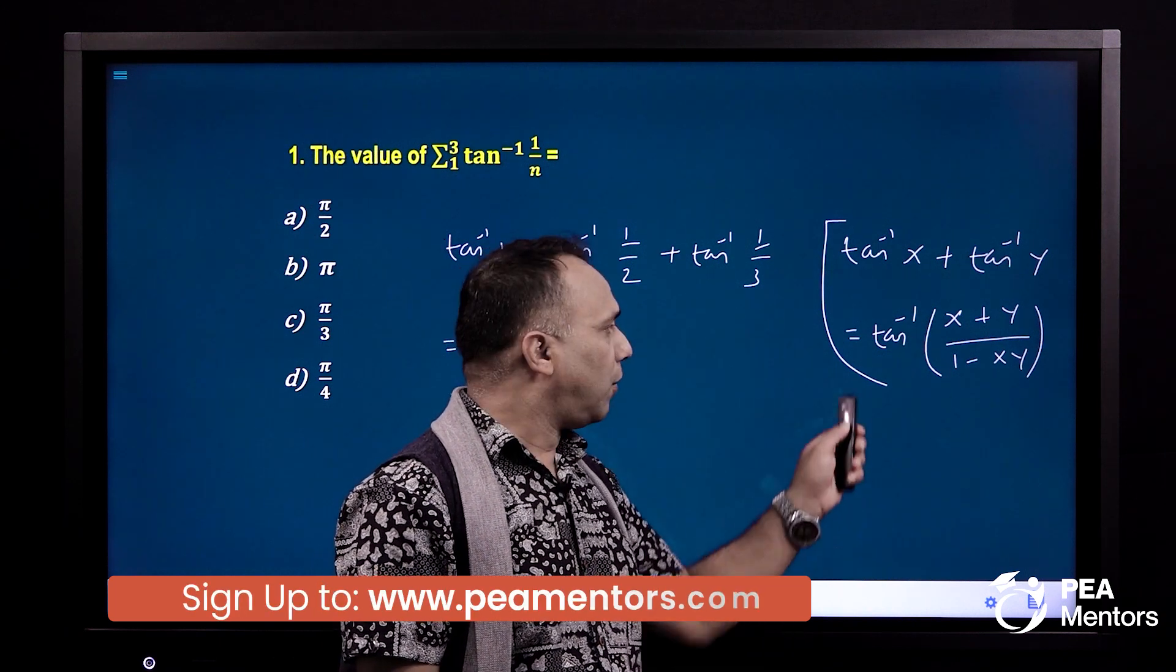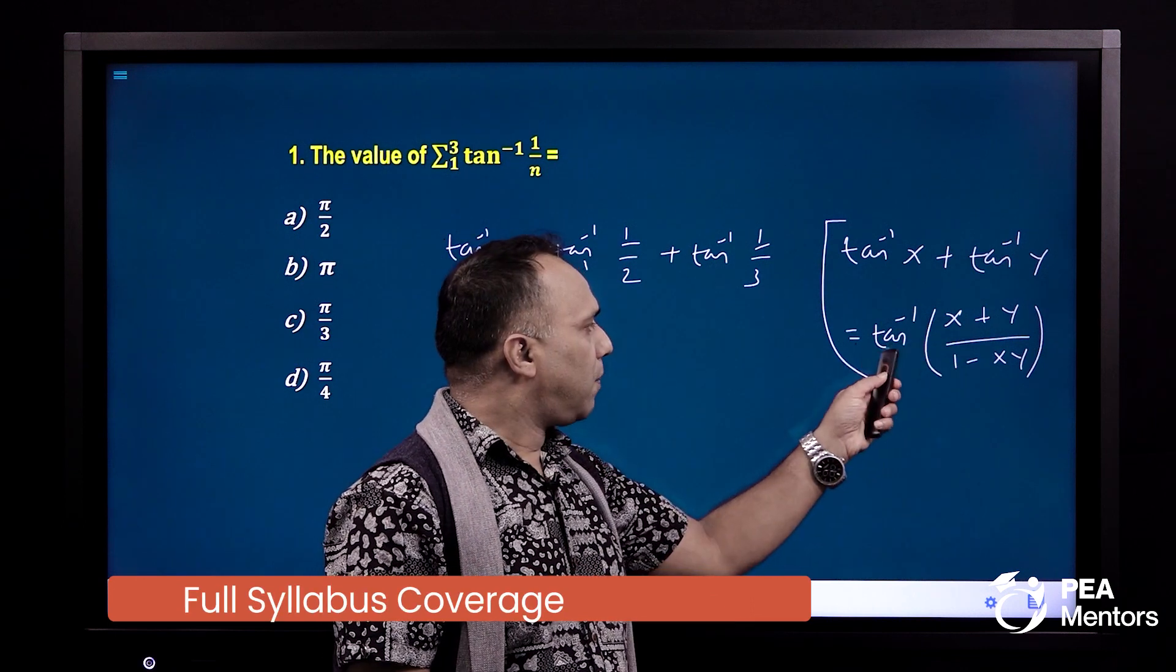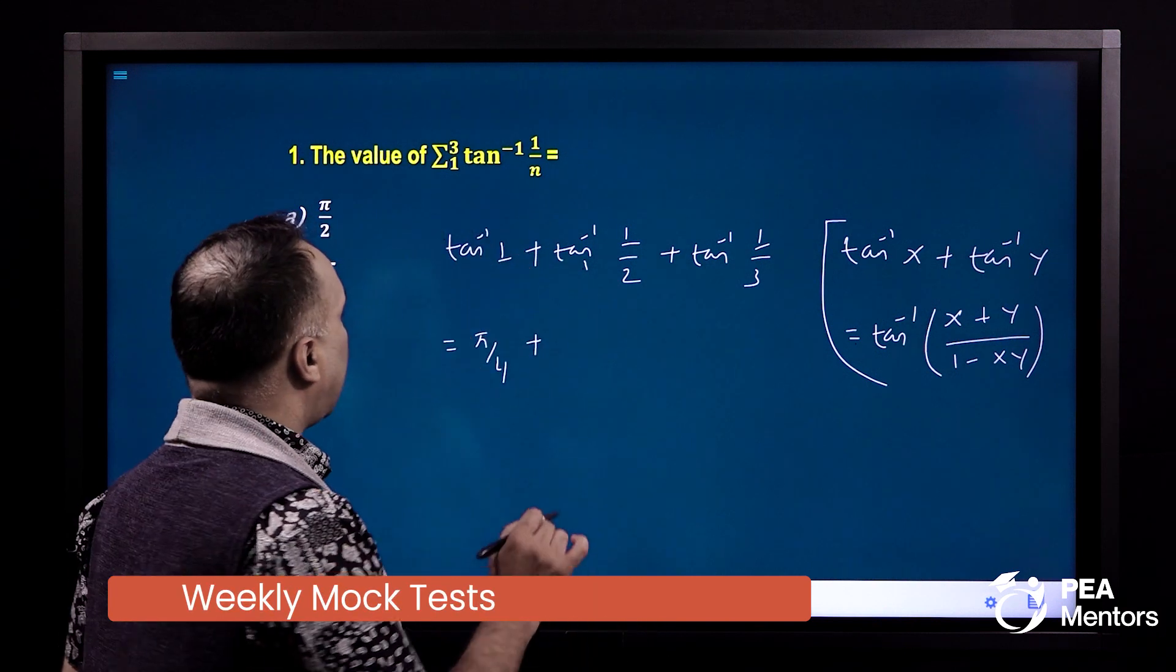Yathi xy greater than 1 sabani. Kya tiyo formula? Pi plus tan inverse x plus y upon 1 minus xy. Yow formula? Abhi ya lai.